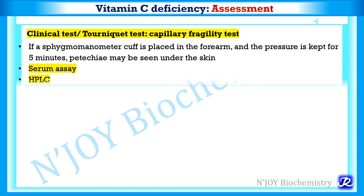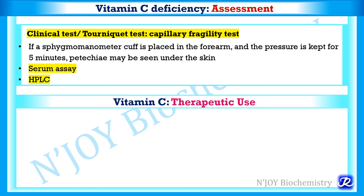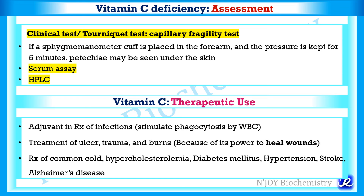Vitamin C deficiency assessment can be done by the tourniquet test, also called the capillary fragility test, which is positive in this condition. In this test, a sphygmomanometer cuff is placed on the forearm and pressure is kept for 5 minutes; petechiae may be seen under the skin. Serum assay of vitamin C levels and HPLC (high-performance liquid chromatography) can also be used to estimate vitamin C levels. Vitamin C has various therapeutic uses: it is used as an adjuvant in treatment of infection, ulcer, trauma, and burns. It is also given in the treatment of common cold, hypercholesterolemia, diabetes mellitus, hypertension, stroke, and Alzheimer's disease.